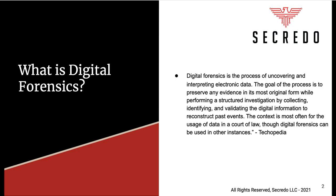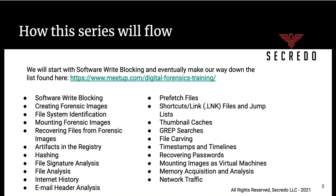Now that that's out of the way, let's start getting into the fun stuff. So how the series will flow — this is the first step. We're going to start with software write blocking, and eventually we're going to make our way down the full list: creating forensic images, hashing, email header analysis, prefetch files, thumbnail caches, file carving, recovering passwords, mounting images, virtual images, and network traffic.